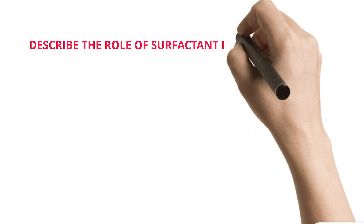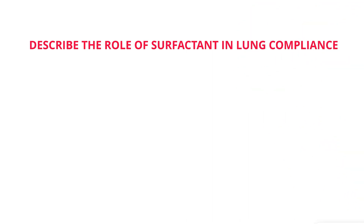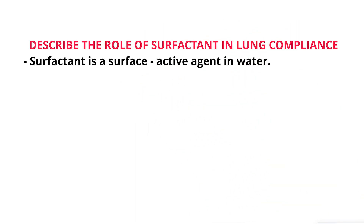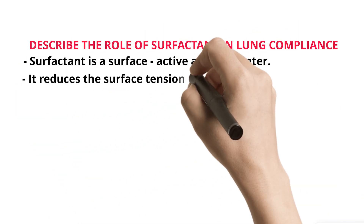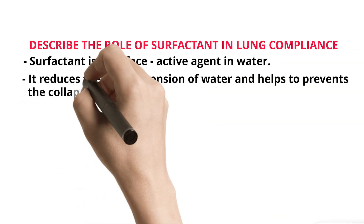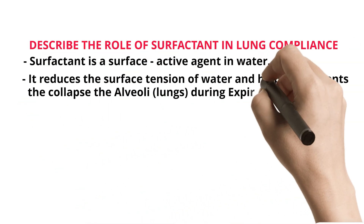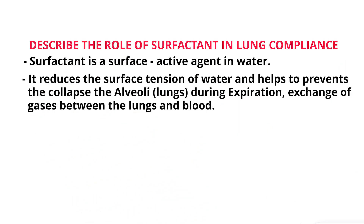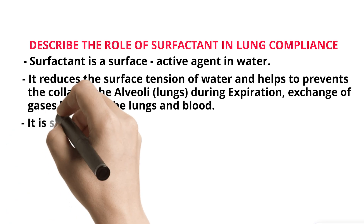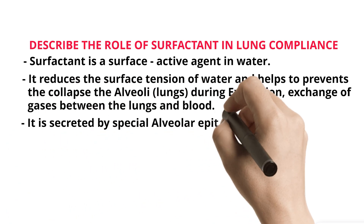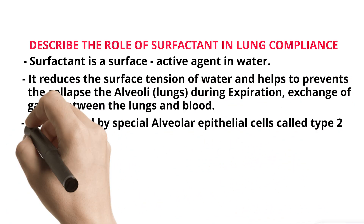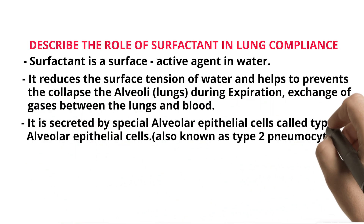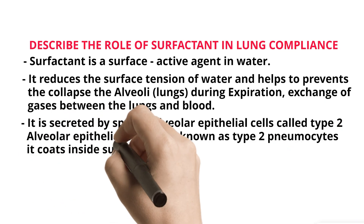Surfactant is a surface-active agent in water. It reduces the surface tension of water and helps to prevent the collapse of the alveoli during expiration, facilitating exchange of gases between the lungs and blood. It is secreted by special alveolar epithelial cells called type 2 alveolar epithelial cells, also known as type 2 pneumocytes. It coats the inside surface of the alveoli.